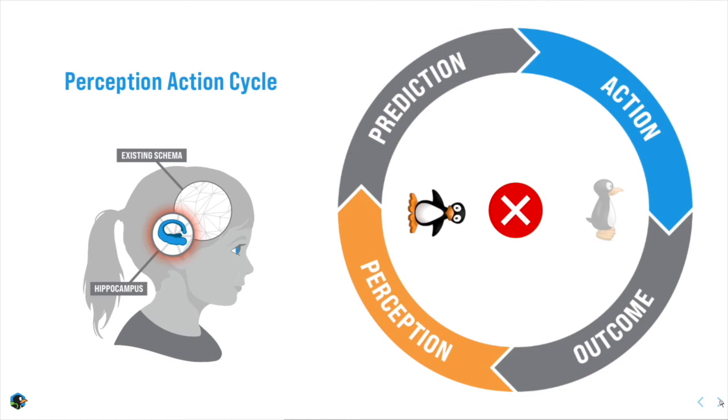This is how misconceptions are rectified. But very importantly, a second signal is also emitted from the hippocampus, theta waves that tell the brain you need to learn something new. You need to build new schema.